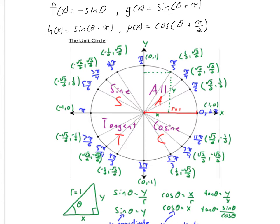Now let's verify this equivalence using the unit circle. Let's pick an arbitrary value for theta — I'm going to pick pi over 4, that's my favorite. We're going to plug theta into all these functions and see if we get the same value. The first value is negative sine theta, and sine of pi over 4 is your y value, so root 2 over 2. Because it's negative, f of x is going to be negative root 2 over 2.